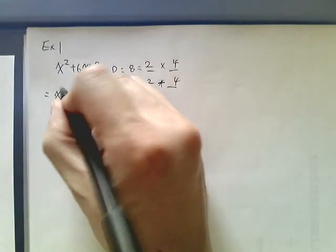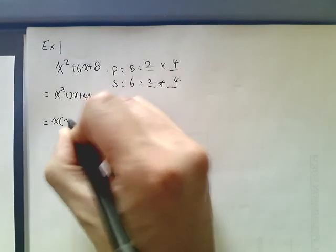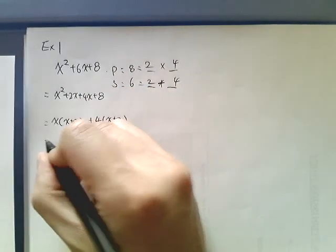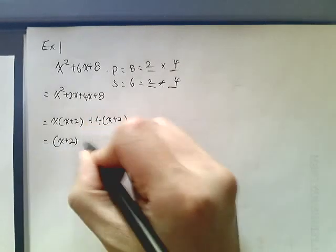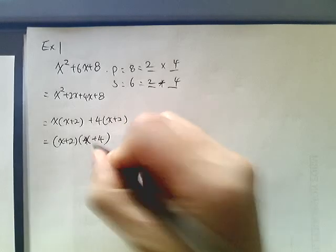So then we have x-squared plus 2x plus 4x plus 8. So then x, x plus 2 plus 4, x plus 2. Then we have x plus 2 as this, a common factor. And then we have x plus 4. So we have factored it.